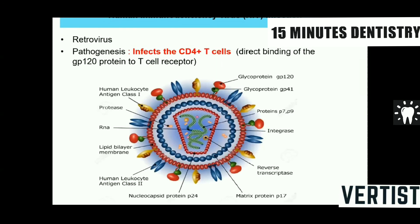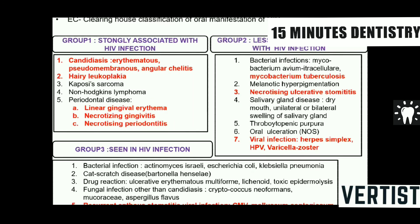The human immunodeficiency virus is a retrovirus. It infects CD4 T cells, thus affecting the immune system, and because the immune system is compromised, various infections are associated with HIV: candidiasis of different types, necrotizing gingivitis, necrotizing periodontitis, mycobacterium tuberculosis, necrotizing ulcerative stomatitis, various viral infections, aphthous stomatitis, Kaposi's sarcoma, and Non-Hodgkin's lymphoma.